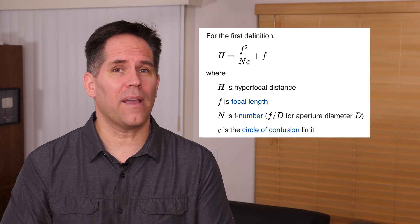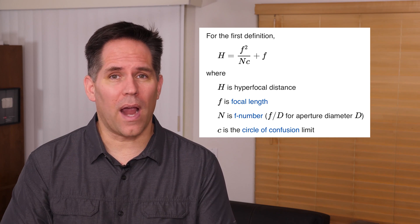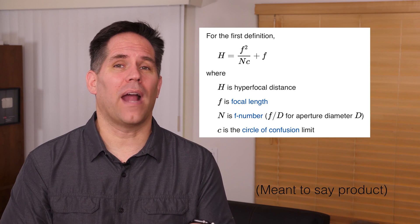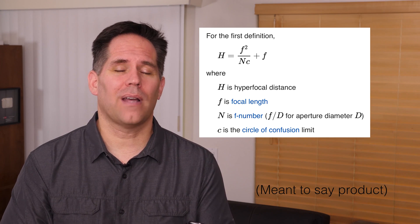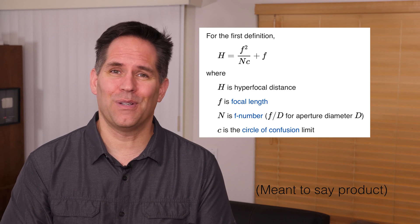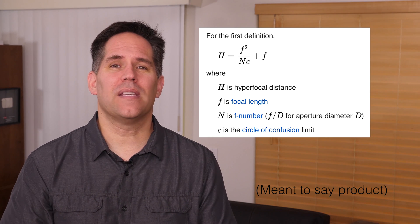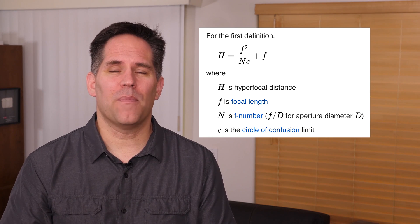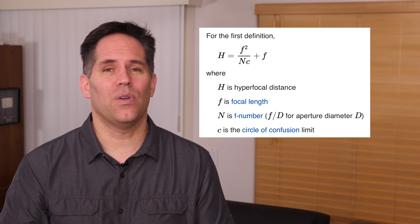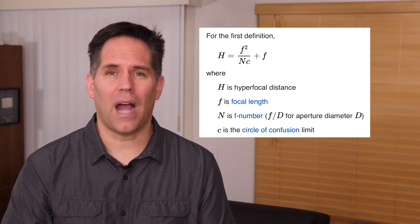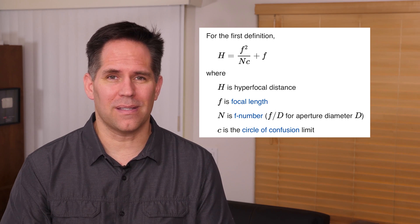If you actually want to know the equation, it is your focal length squared, divided by the sum of your aperture times the circle of confusion — which is a completely different topic. If you take all those things together, it should give you a very good approximation of your hyperfocal distance.